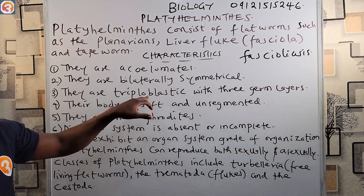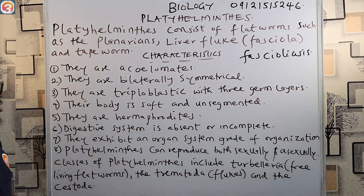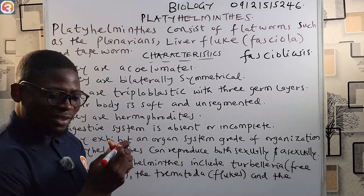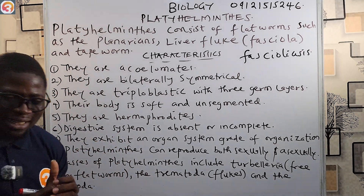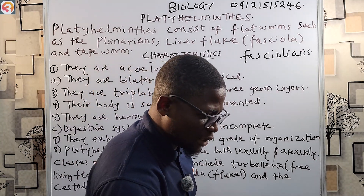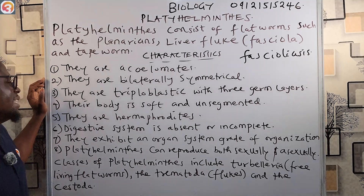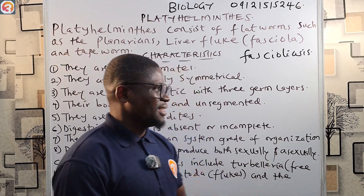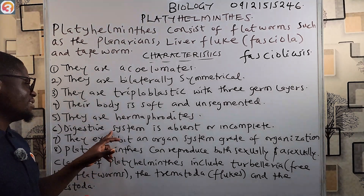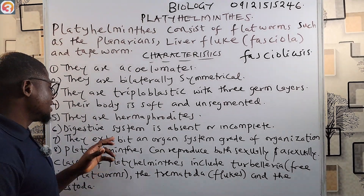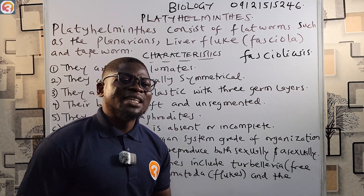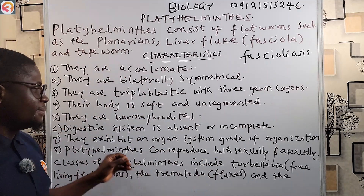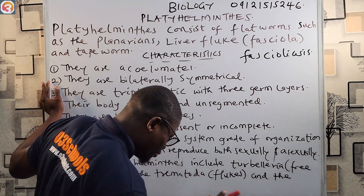Four: their body is soft and unsegmented — not broken down into segments. Five: they are hermaphrodites — they have both male and female sex organs. Six: the digestive system is absent or incomplete — the anus is absent in Platyhelminthes, meaning there is no guarantee of a complete digestive tract.